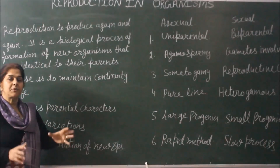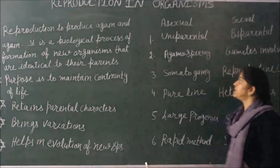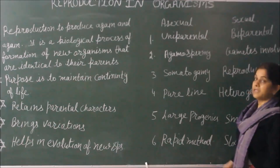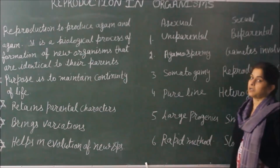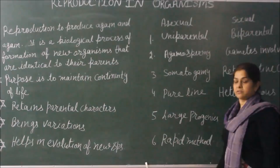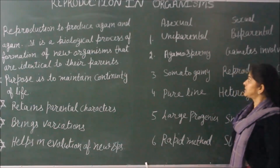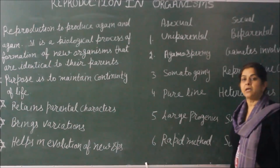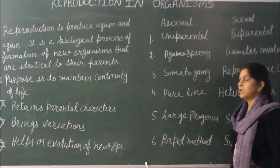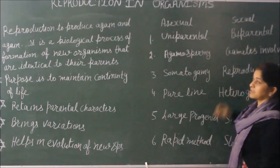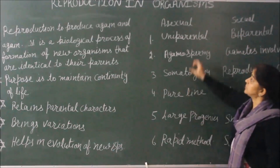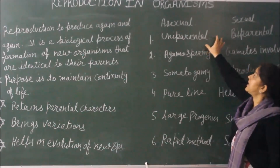Now, what are the various kinds of reproduction? There are two major types: asexual reproduction and sexual reproduction. In asexual reproduction, it is uniparental or monoparental — only one parent is needed, and two parents are not required. But in case of sexual reproduction, it is biparental — one male and one female parent are needed for reproduction to occur.